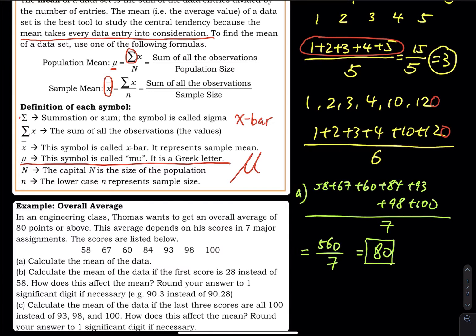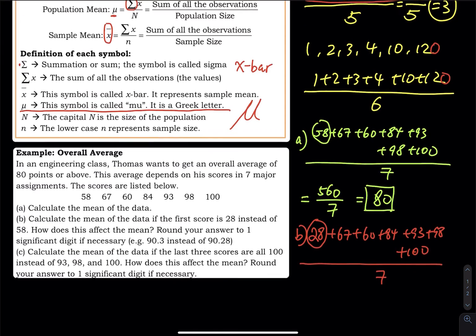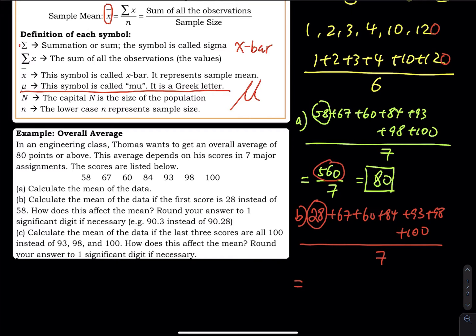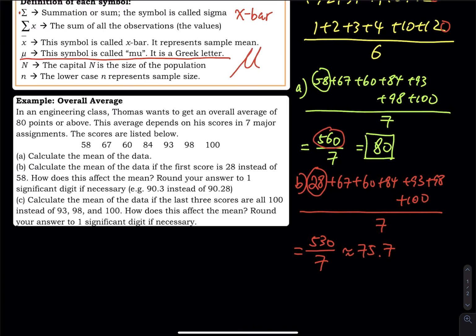In part (b), what if the first score is 28 instead of 58? Change 58 to 28, then the rest stays the same: plus 60 plus 84 plus 93 plus 98 plus 100, divided by seven. When you lower the score by 30, the sum is no longer 560—you lose 30 points, so it's 530 divided by 7. That's around 75.7. A smaller sum gives you a smaller mean.